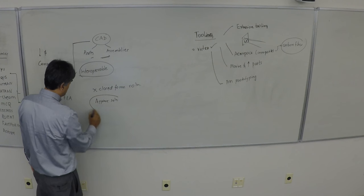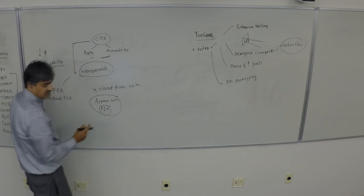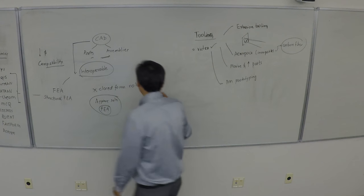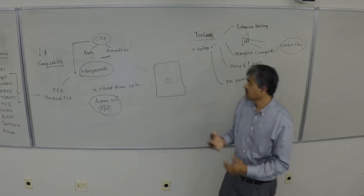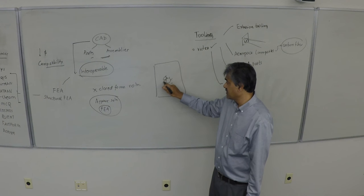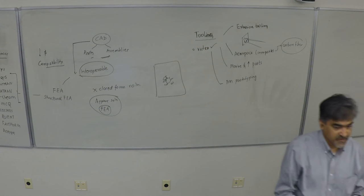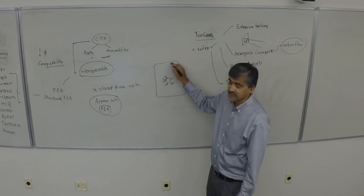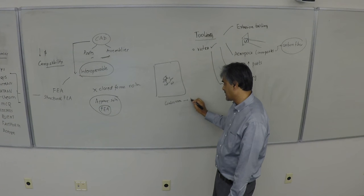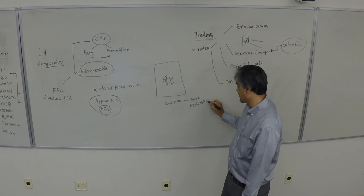Why do FEA? We generally don't have closed-form solutions. When a model is complex enough with too many things going on, you cannot reach a closed-form solution, so you go with an approximate solution. That's where FEA helps you get to a converging solution. The purpose of meshing is to take a continuum and discretize it to allow detailed local analysis, accounting for all local happenings within that model.